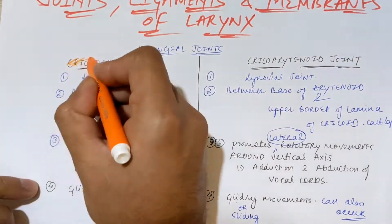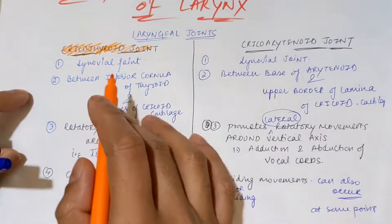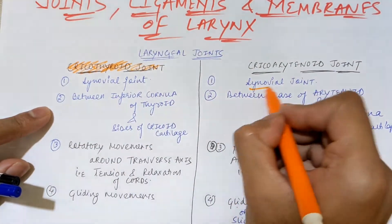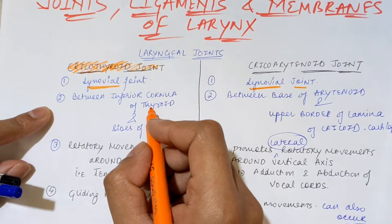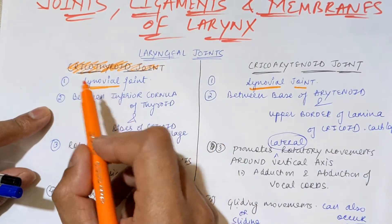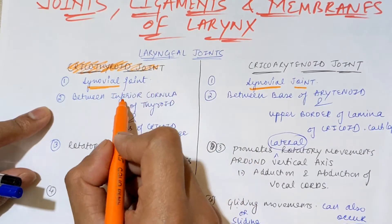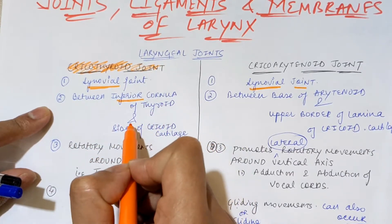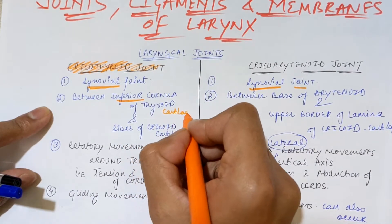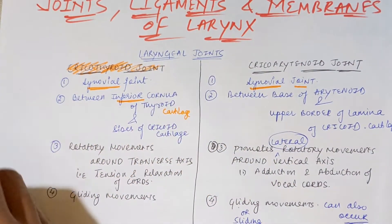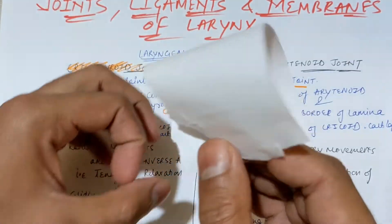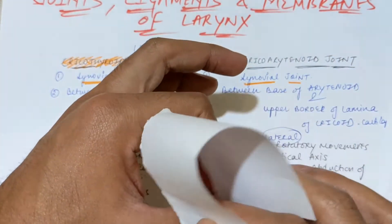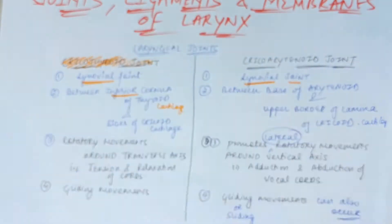The cricothyroid joint is a synovial joint — both joints are actually synovial joints. The cricothyroid joint is present between the cricoid and thyroid cartilage. In the thyroid cartilage, there are two cornua — superior and inferior — and this joint is formed from the inferior cornu of the thyroid cartilage, attaching to the sides of the cricoid cartilage.